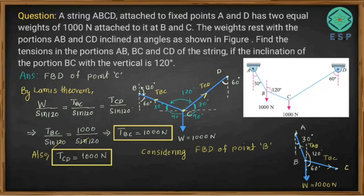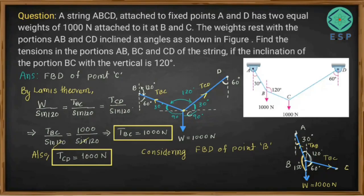We need to find all angles between the respective forces at point B. The angle for portion BA with the vertical is 30 degrees, giving 60 degrees on one side. Since BC makes 30 degrees with the horizontal on each side, the angle between T_AB and W becomes 150 degrees, and the angle between T_BC and T_AB is also 150 degrees, while the remaining angle is 60 degrees.